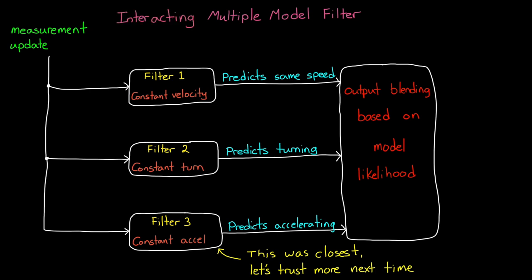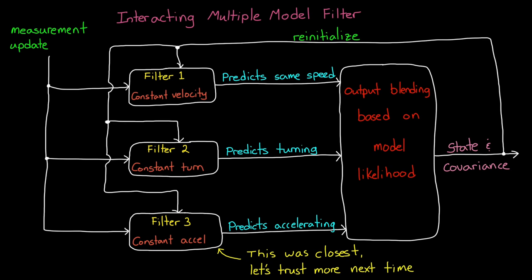So to fix this, we allow the models to interact. After a measurement, the overall filter gets an updated state and state covariance based on the blending of the most likely models. At that point, every filter is reinitialized with a mixed estimate of state and covariance based on their probability of being switched to or mixing with each other. This is constantly improving each individual filter to reduce its own residual error, even when that filter doesn't represent the true motion of the object. In this way, an IMM filter can switch to an individual model without having to wait for it to converge first.